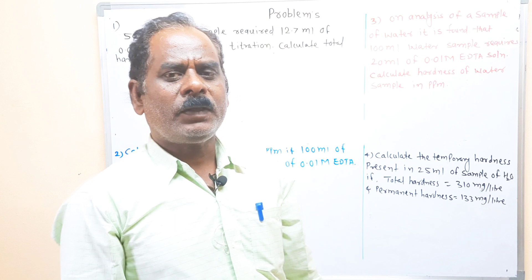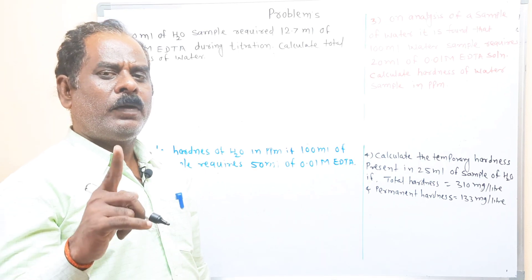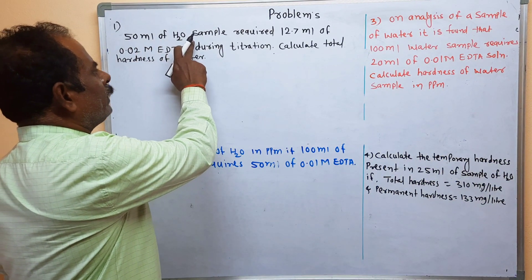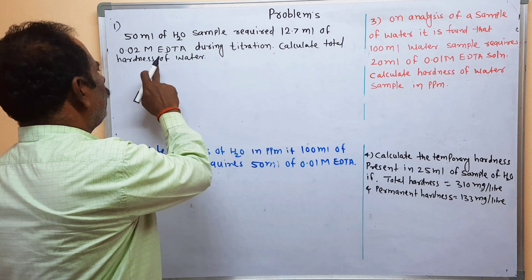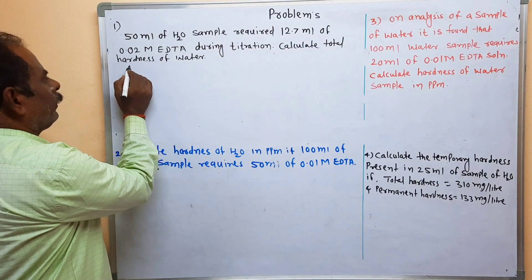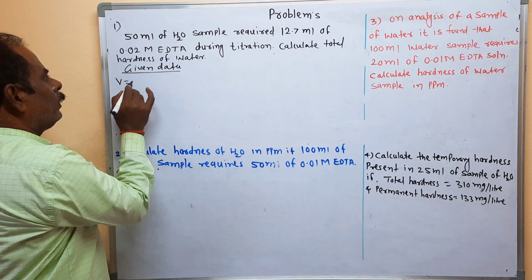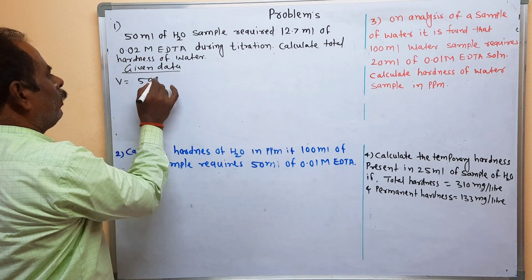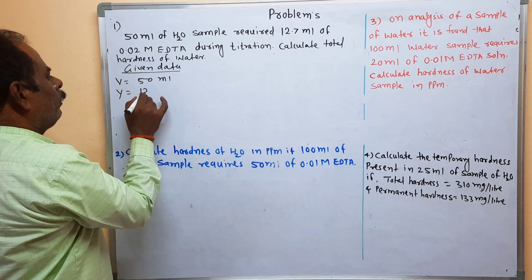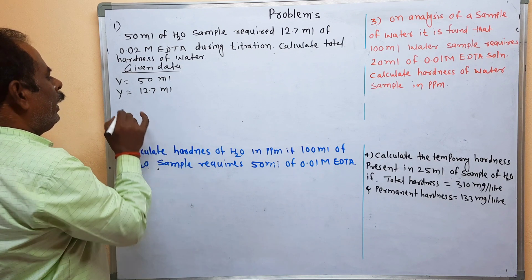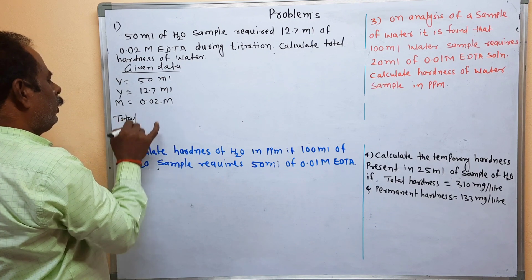Some problems are given on the blackboard. First, read the problem twice and write the given data. First problem: 50 ml of water sample required 12.7 ml of 0.02 molar EDTA during titration. Calculate the total hardness of water. Write the given data: volume of water sample V = 50 ml, volume of EDTA Y = 12.7 ml, and molarity of EDTA M = 0.02 molar.